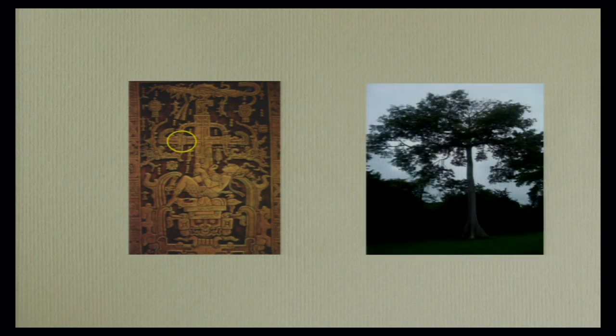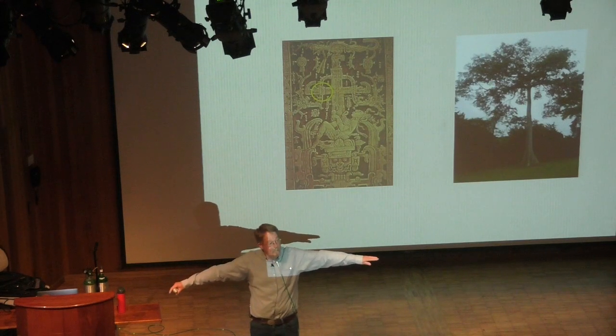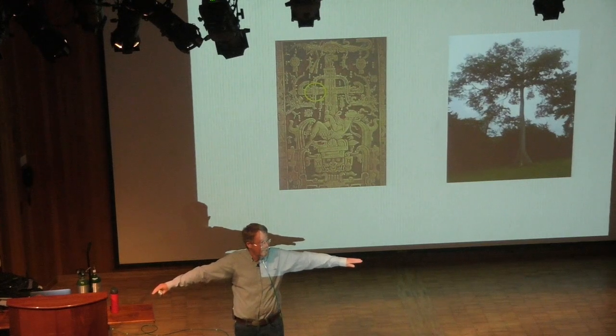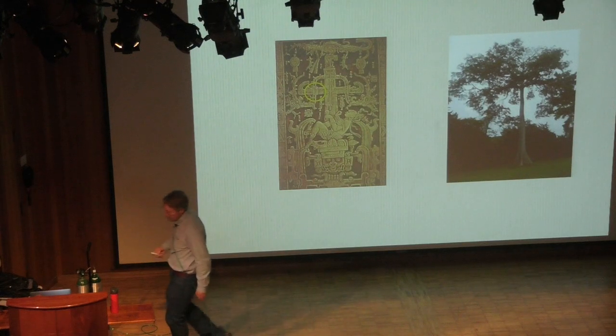This isn't King Pakal flying off into space in a rocket. This is King Pakal who has died in the fetal position, falling into the double-jawed serpent's mouth, the entrance to the underworld. That's not a rocket ship — that's actually a tree, the tree of life. Right there is the Maya symbol, the word for tree, written right on it. This is the sacred tree whose roots extend into the underworld and whose canopy extends into the heavens. It connects the world together. The Ceiba tree down in Mexico and Central America grows exactly like that cruciform shape.